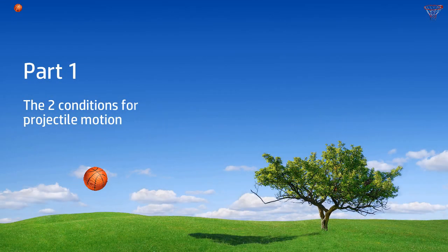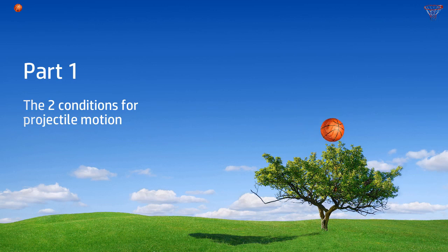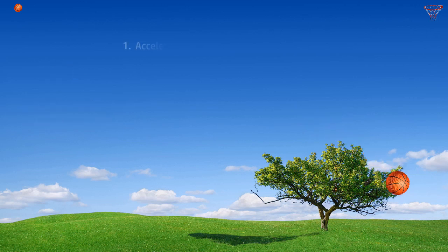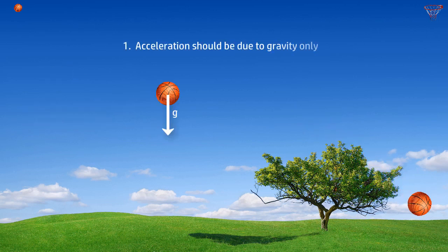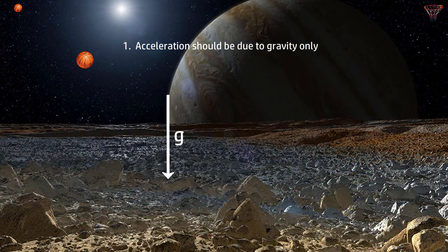There are two conditions under which a motion of a particle can be called projectile motion. One, acceleration should be due to gravity only — usually Earth's gravity — but if the experiment is happening on any other celestial body, say like Jupiter, that would qualify as well.